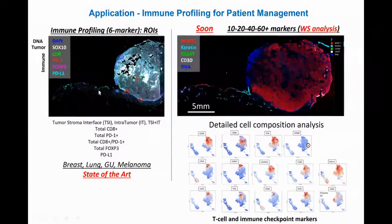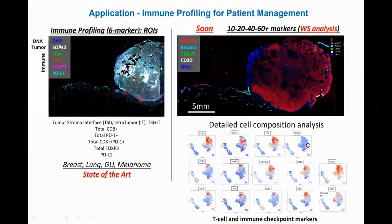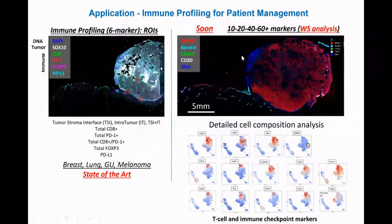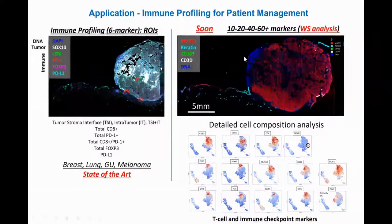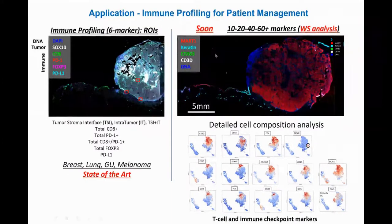One example is the current state of the art for immune profiling in the clinic, where six markers are generally used to profile a tumor. This is an exophytic large melanoma with an attached piece of skin with melanoma in situ. Typically, one channel is used for DNA staining, another for a tumor marker, leaving only four markers for profiling immune cells. This is an image of only five markers from a 40-plex dataset — going from six to 40 provides tremendous capacity for detailed cell composition analysis, demonstrating T-cell and immune checkpoint marker distributions via UMAPs.